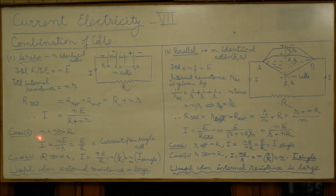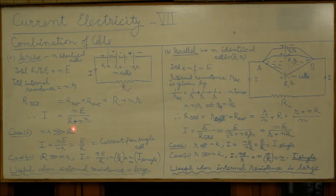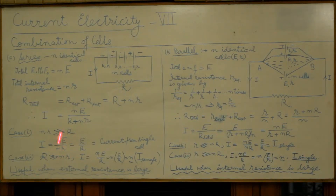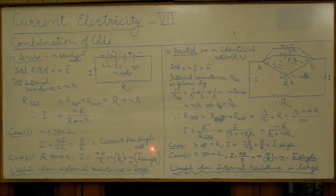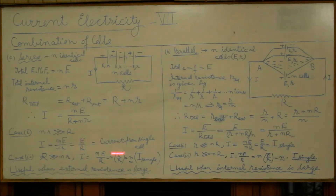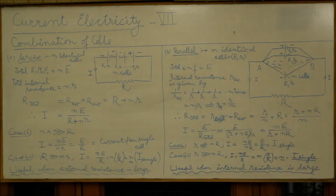This relation needs to be analyzed for two situations. Supposing these cells have large internal resistance — if nr happens to be very large as compared to R, we can neglect R. The relation for current then becomes i = ne/nr, and n cancels out to give e/r. This is like getting current from a single cell, so clearly this combination is not suitable. When we can manage with one cell, we need not use cells in series. The series combination is therefore not useful for cells with large internal resistance.